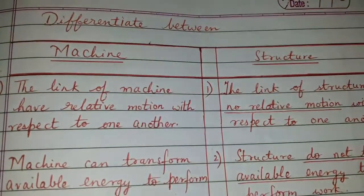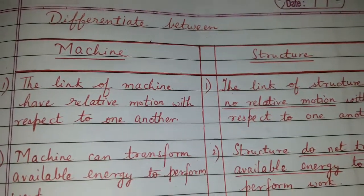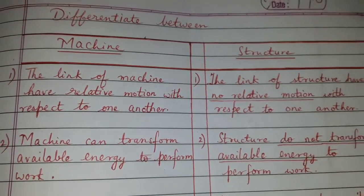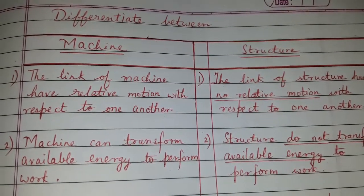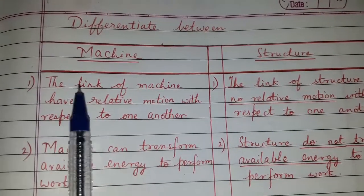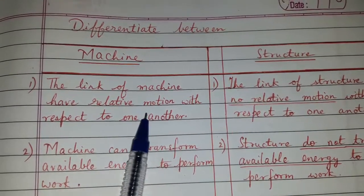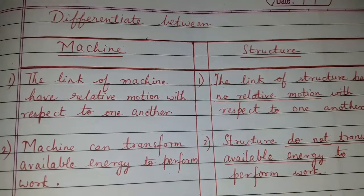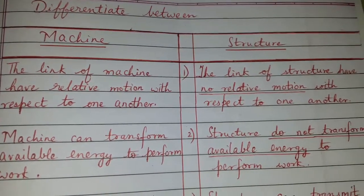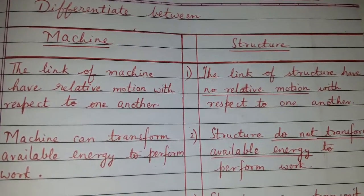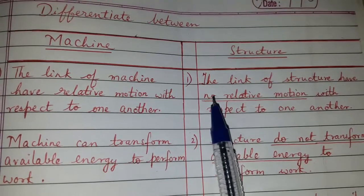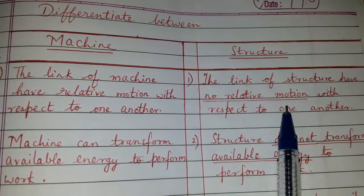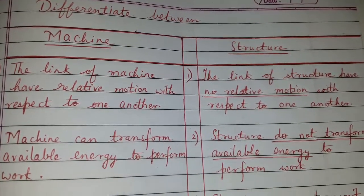Today's topic of discussion is the differentiation between machine and structure. Machine: the links of a machine have relative motion with respect to one another. Structure: the links of a structure have no relative motion with respect to one another.